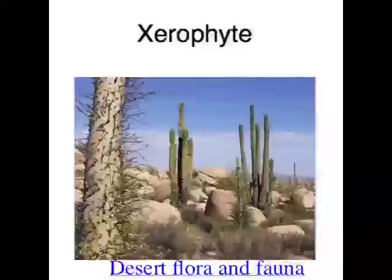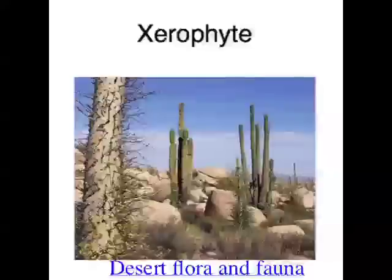Plants which grow in hot, dry environments are called xerophytes, and they show some adaptations too. A structural adaptation of xerophytes is that they have fewer stomata than normal plants, so they don't lose as much water vapor, because in the desert lots of water would normally evaporate and be lost through stomata. Their leaves also have a reduced surface area — another structural adaptation — meaning the plant can lose less water through its leaves. Plants which live in really salty environments are called halophytes. Some halophytes have a physiological adaptation where they can excrete excess salt from salt glands.